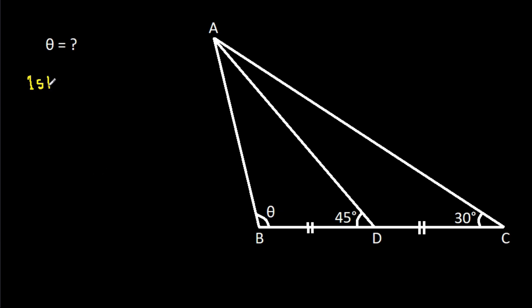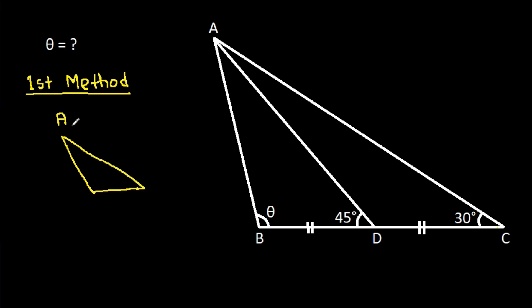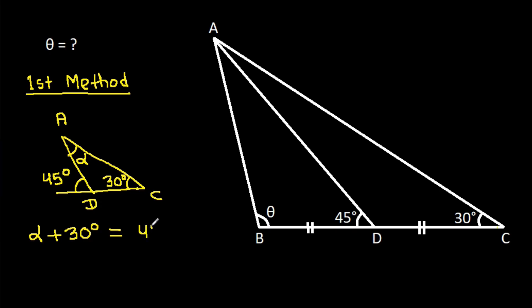The first method: in triangle ACD, angle ACD is 30 degrees. Suppose this interior angle is alpha, and the exterior angle is 45 degrees. So alpha plus 30 degrees equals 45 degrees, which means alpha is 15 degrees.